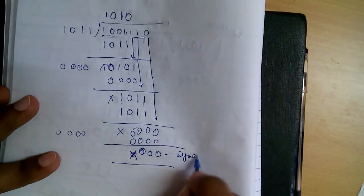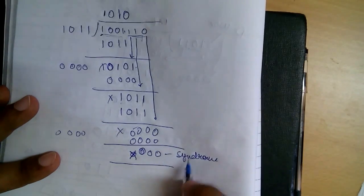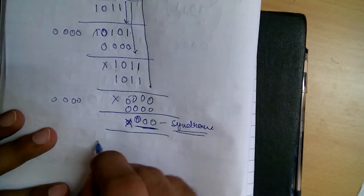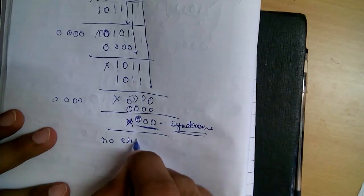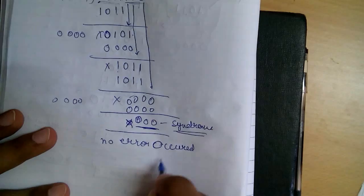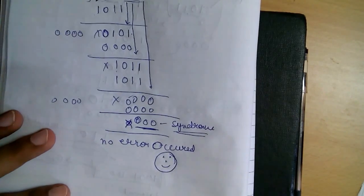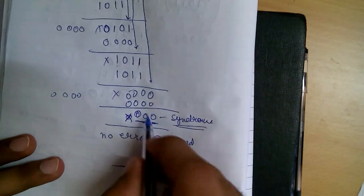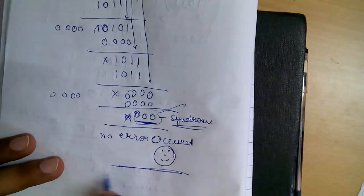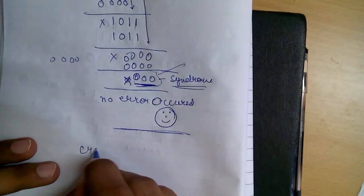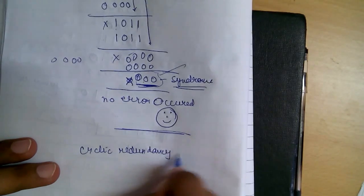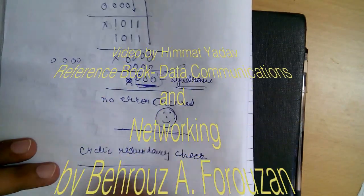This is the syndrome the receiver generates. When the syndrome is 0 0 0, it means no error occurred. If some error had occurred, you would not get this all-zero syndrome. That is the last three-bit syndrome, and this is how we perform Cyclic Redundancy Check. See you next time.